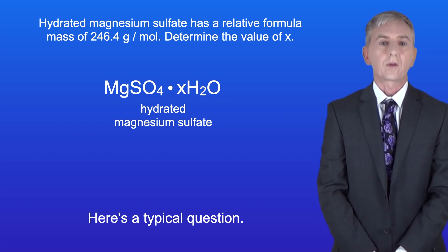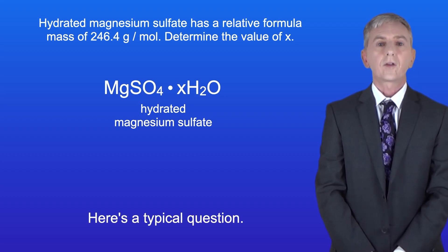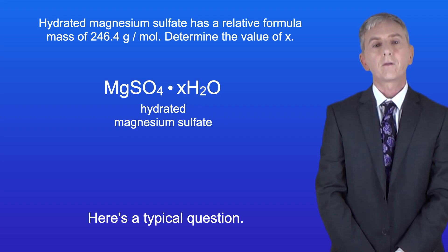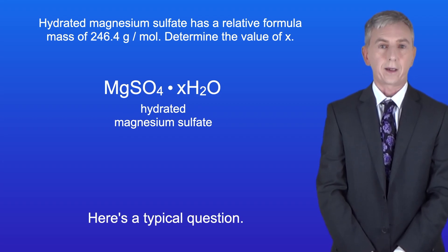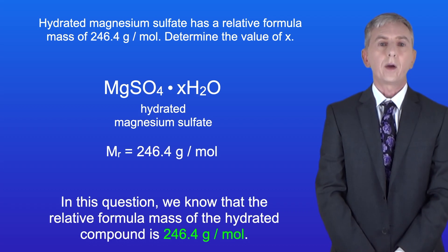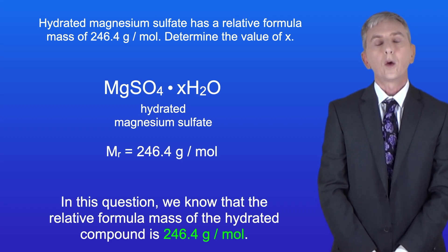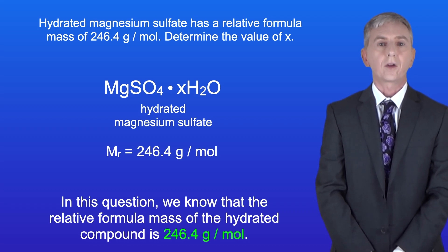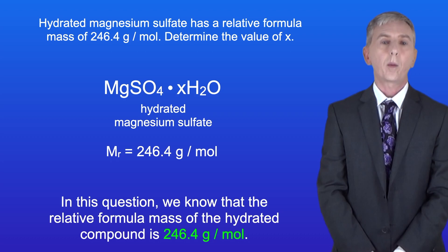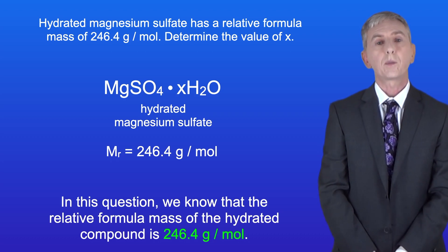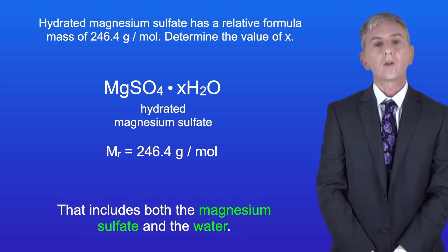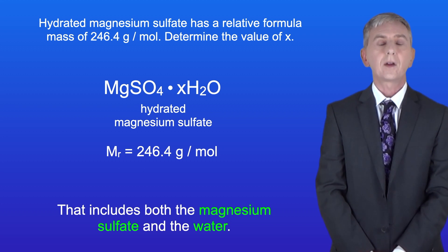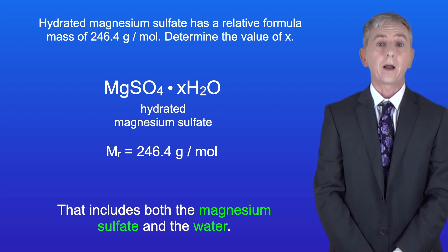Hydrated magnesium sulfate has a relative formula mass of 246.4 grams per mole. Determine the value of X. In this question we know that the relative formula mass of the hydrated compound is 246.4 grams per mole — so that includes both the magnesium sulfate and the water.